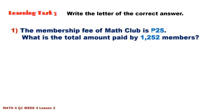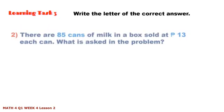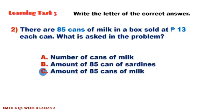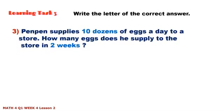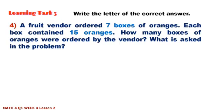Learning Task 3: Write the letter of the correct answer. Number 1: The membership fee of a math club is 25 pesos. What is the total amount paid by 1,252 members? Number 2: There are 85 cans of milk in a box, sold at 13 pesos each can. What is the problem asking? Number 3: A store supplies 10 dozens of eggs a day. How many eggs does it supply to the store in two weeks? Number 4: A fruit vendor ordered seven boxes of oranges; each box contains 15 oranges. How many oranges were ordered by the vendor?